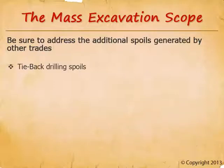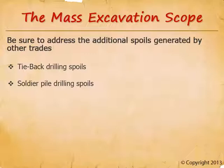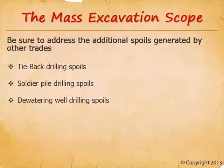Tieback drilling spoils: we need to coordinate the length, diameter, and quantity of tiebacks between the shoring and excavation bidders during the bidding phase. Soldier pile drilling spoils: soldier piles are commonly installed by one of three methods — driven, vibrated, or drilled. If the piles are driven or vibrated, there are no additional spoils. But if they're set in drilled holes, there are additional spoils. We need to coordinate the shoring methods with the excavation bidders during the bidding period, and they need to know the depth, diameter, and quantity of these drilled holes. Dewatering well drilling spoils: dewatering is traditionally a design-build trade, so these won't be on the drawings. Nevertheless, the excavation bidders need to know the depth, diameter, and quantity during the bidding period.